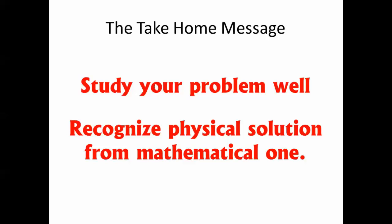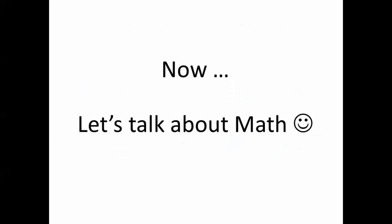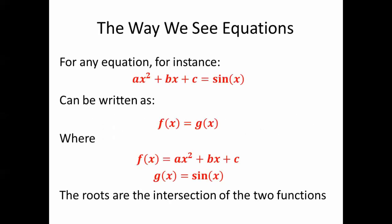Now we can talk about mathematics. The way we see the equation is very important to make clear before we start. Any equation you have has a left-hand side and a right-hand side. You can write the left-hand side as an f(x) and the right-hand side as a g(x). So the f(x) will be ax squared plus bx plus c, and the g(x) is sin(x).